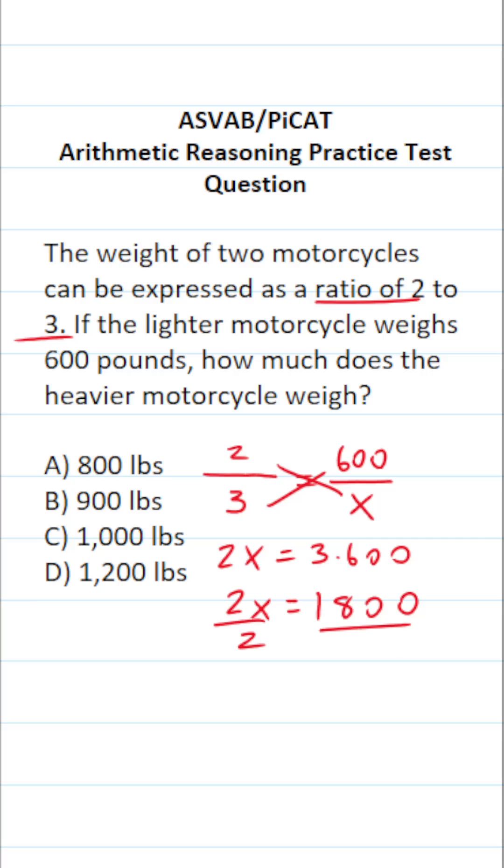Now let's divide both sides by 2 to get X by itself. This says X equals 1,800 divided by 2. Again, 18 divided by 2 is going to be 9. And just tack on those two zeros. So the weight of the heavier motorcycle is going to be B, 900 pounds.